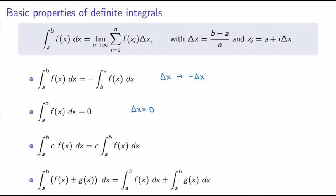Third: if you integrate a function times a constant, you can pull the constant out of the integral. That follows from the definition because f of xi becomes c times f of xi, and by properties of summation you can pull c out, and also outside the limit since it's a constant. And similarly, the fourth property: the integral of a sum of functions equals the sum of the integrals, which follows from the fact that a summation of a sum equals the sum of the summations.